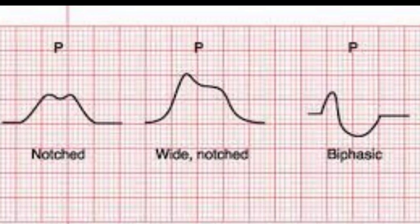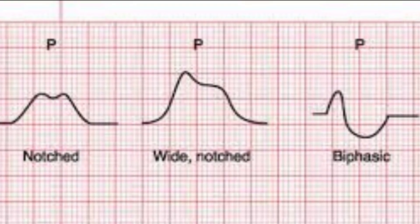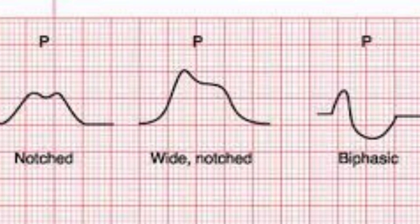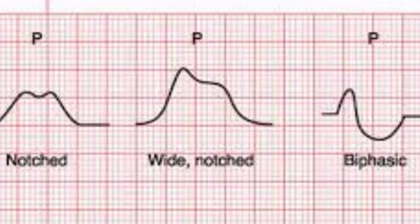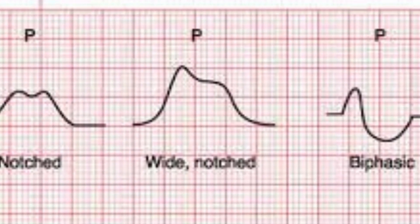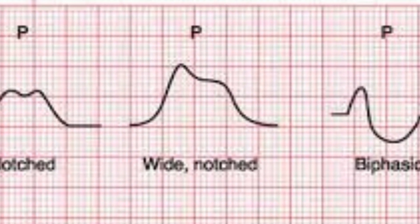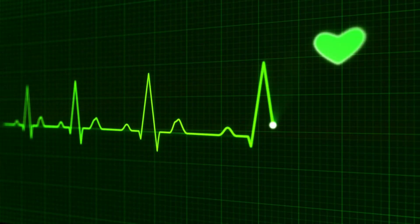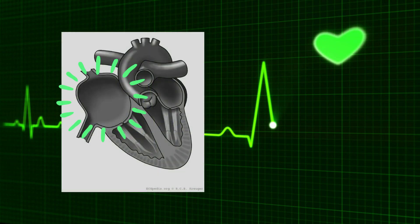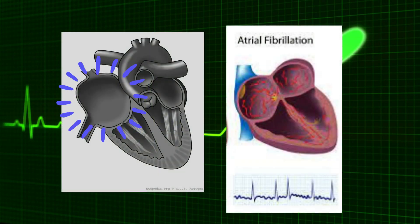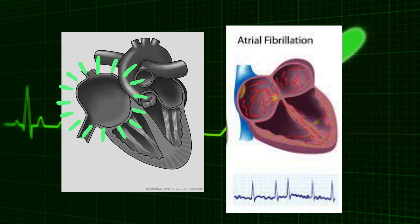Abnormal P-Waves may have different shapes, amplitudes, and durations depending on the underlying condition. Abnormal P-Waves may indicate conditions such as atrial enlargement, atrial fibrillation, or other types of arrhythmias.